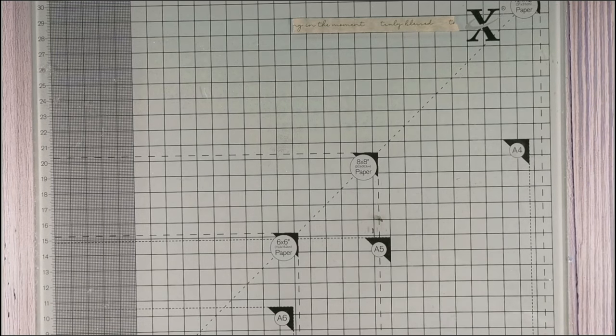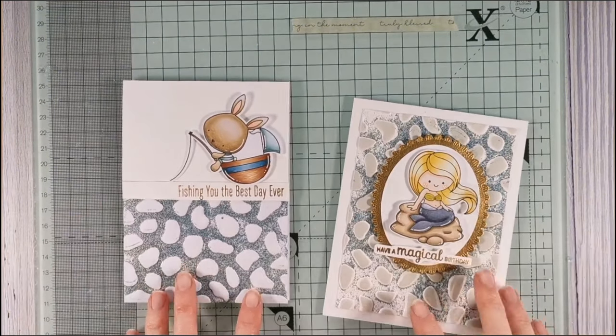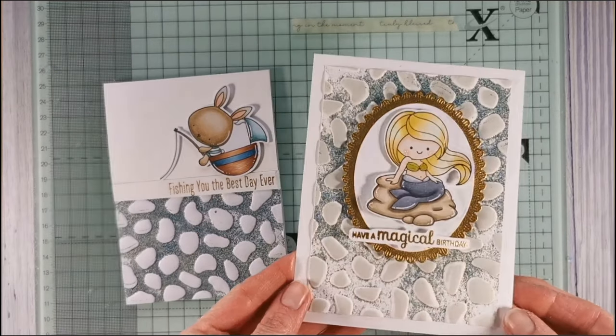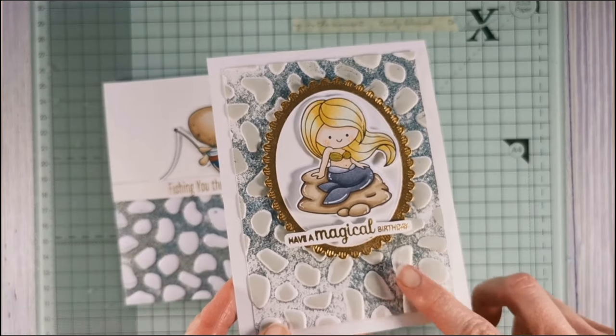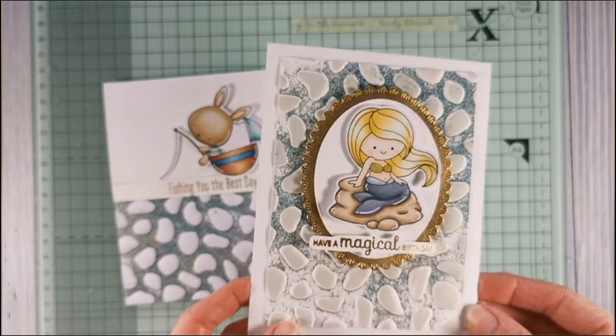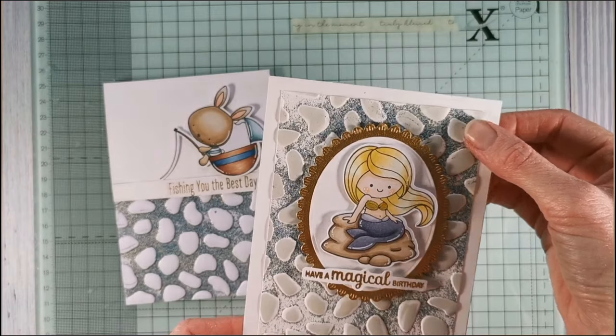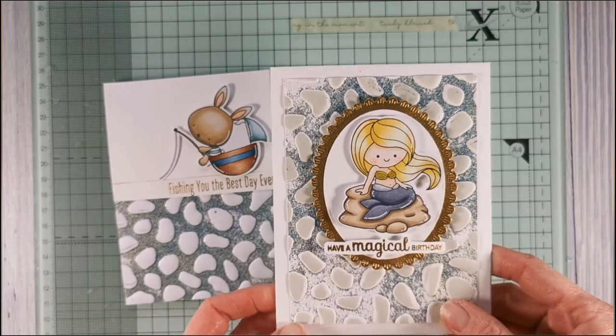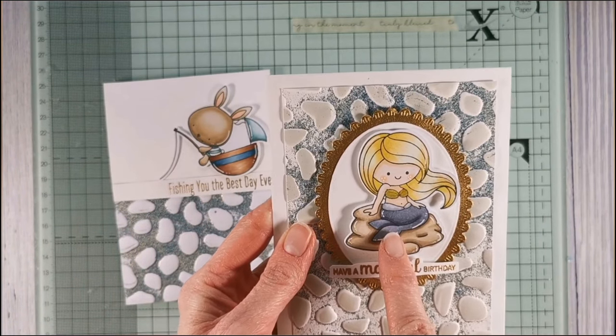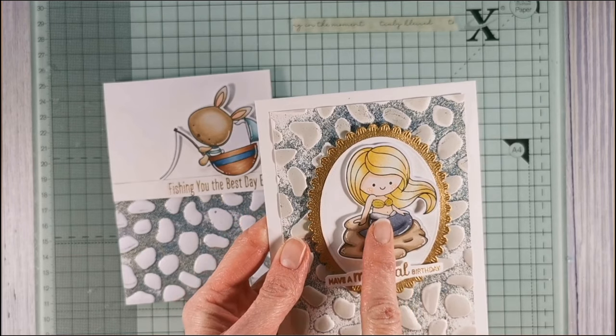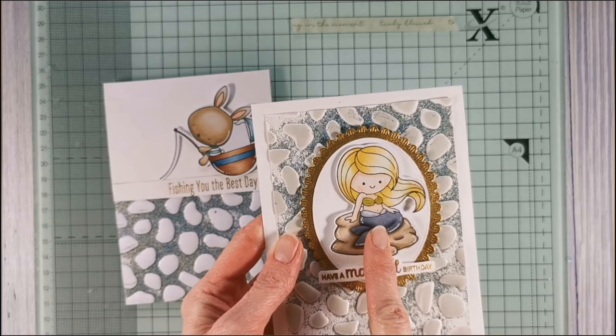So I'm going to show you now how I use those two background panels to turn them into finished cards. For the first one I have used a set by Clearly Besotted, it's an older set called Fairy Tail Mermaid. I thought because she sat on a stone here, I thought it just went really well with that kind of pebbly watery background.